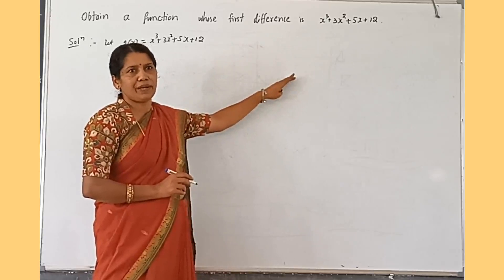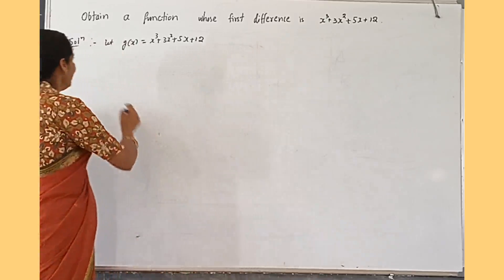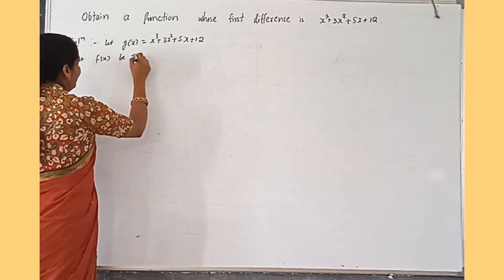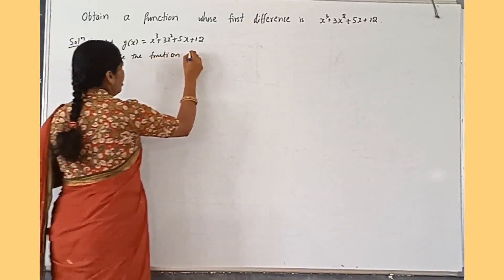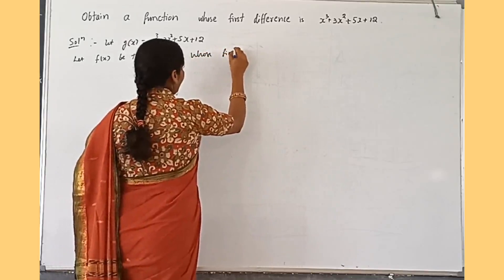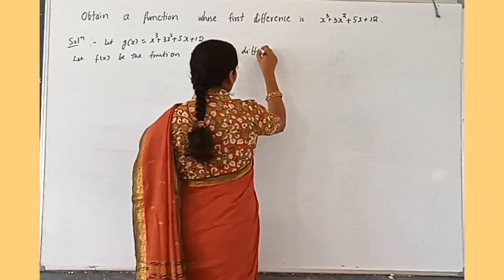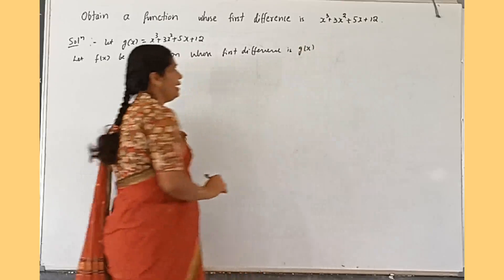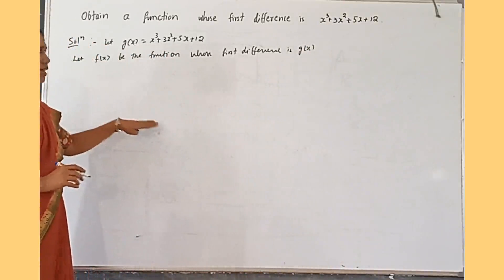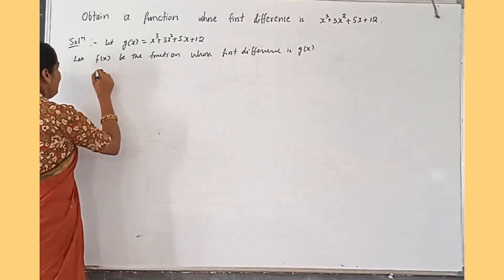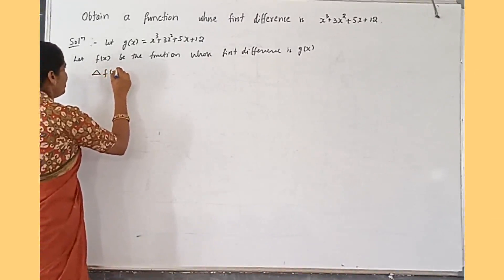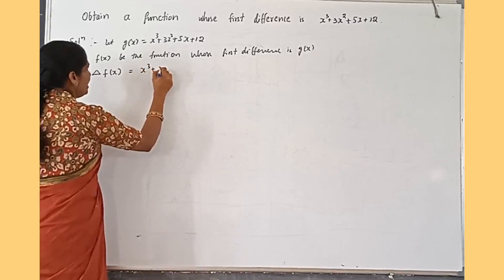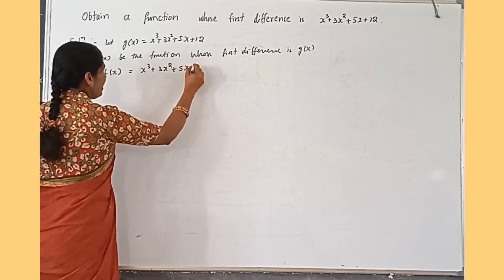That function we have to obtain. Let f(x) be the function whose first difference is g(x), which is x³ + 3x² + 5x + 1. So the first difference of f(x), symbolically written as Δf(x), is equal to x³ + 3x² + 5x + 1.